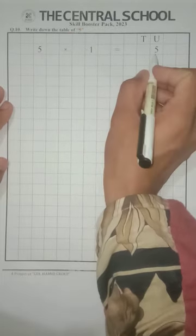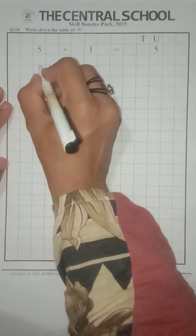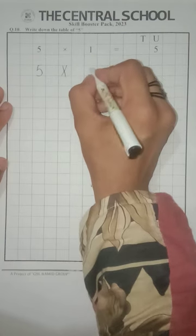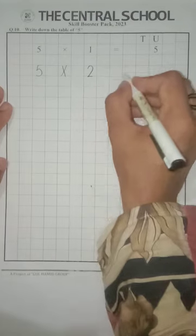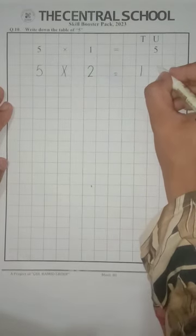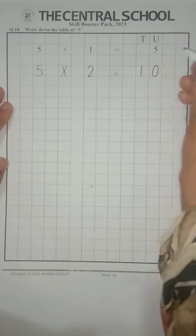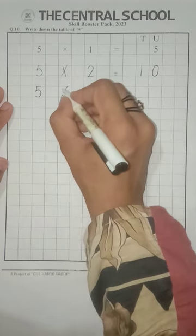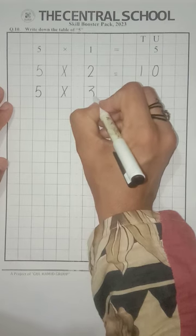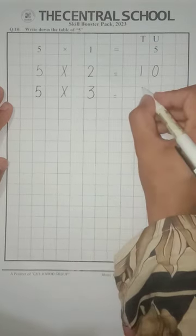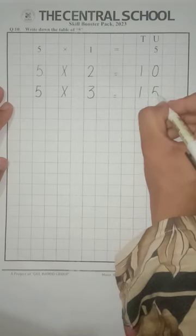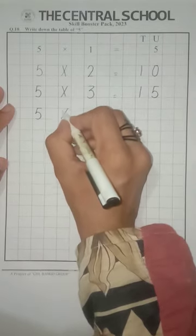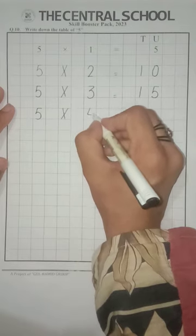5 ones are 5. 5 twos are 10. 5 threes are 15. 5 fours are 20.